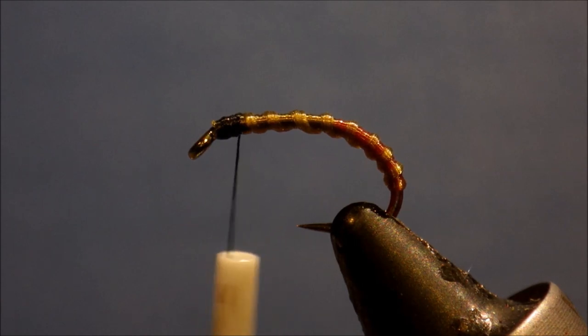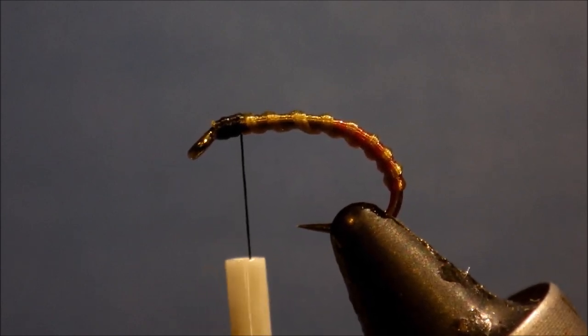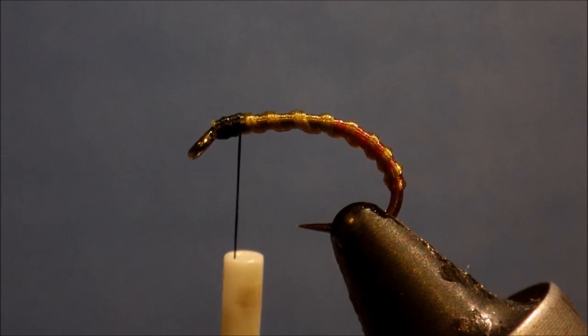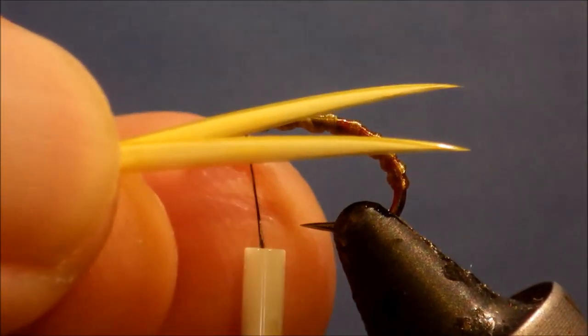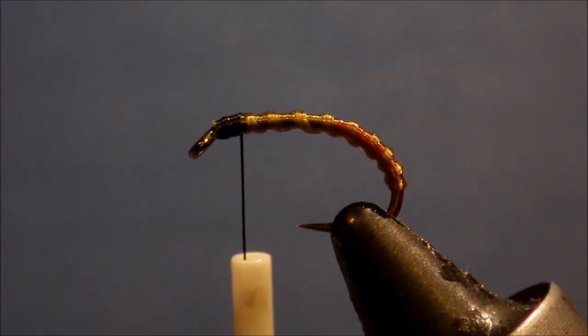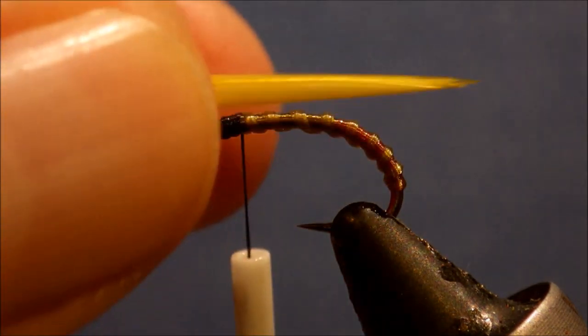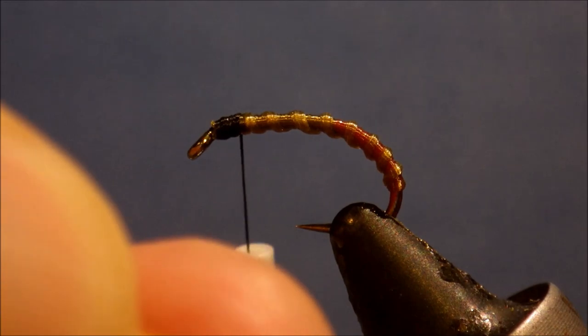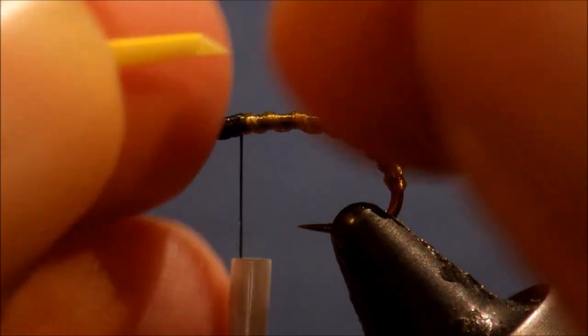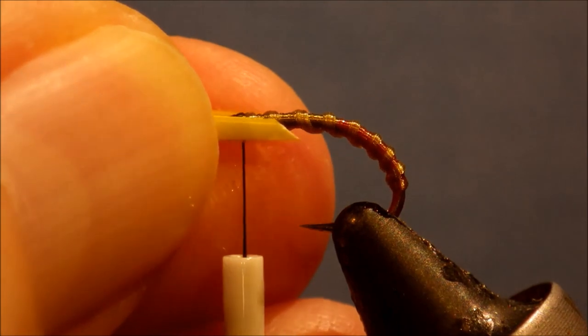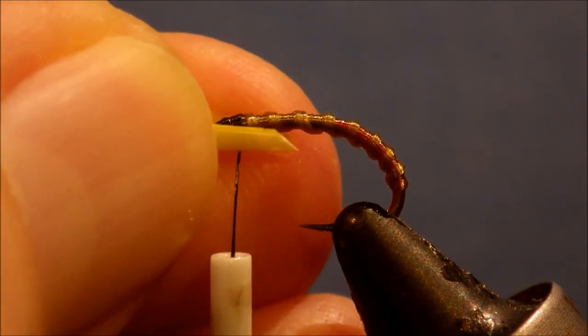For the wing buds I'm just using some goose biot. I've got here dyed sunburst, but the biot itself is quite pale, but it's quite nice. So I'll line them up first of all, two, one for each side. And just, I'll trim them at an angle. I don't want the fine edges. And I'll just split them in my nail and off of them over the hook.